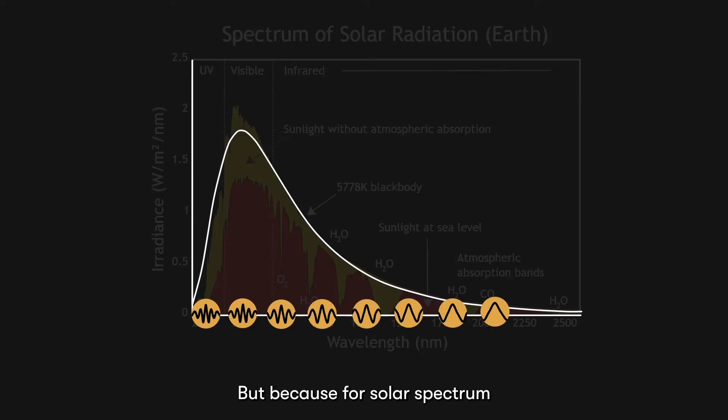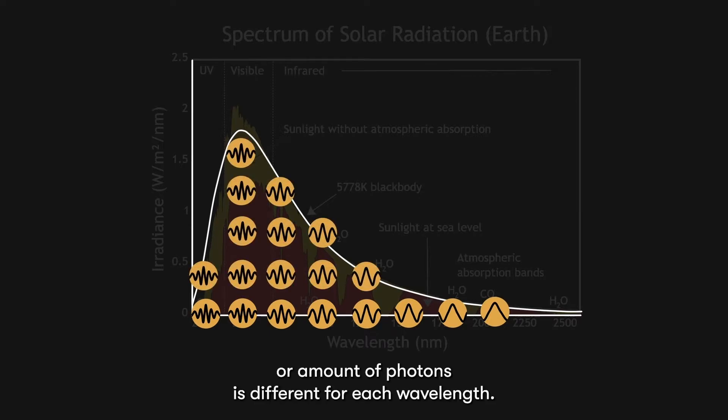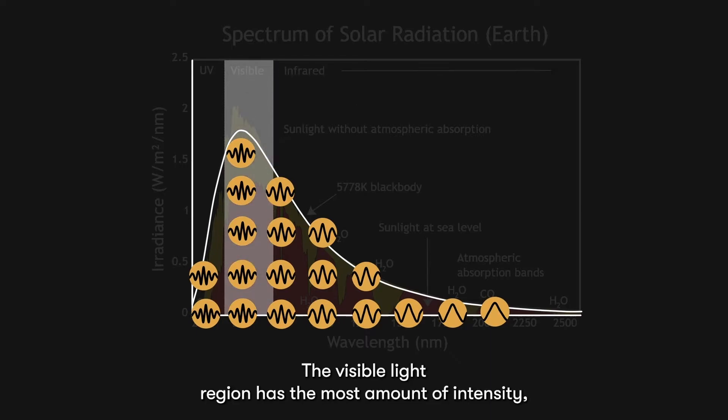But because for solar spectrum, each wavelength has a different intensity, the amount of particles or amount of photons is different for each wavelength. The visible light region has the most amount of intensity, and hence it has the most photons.